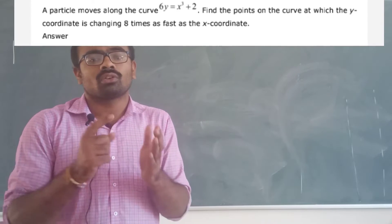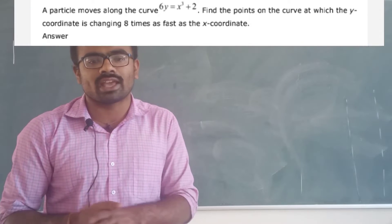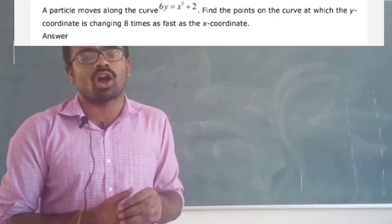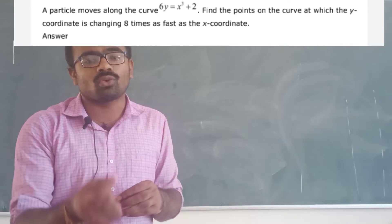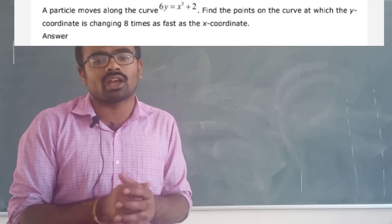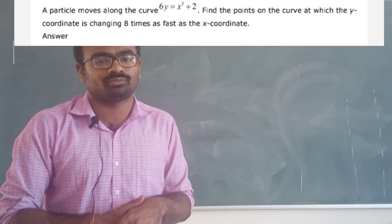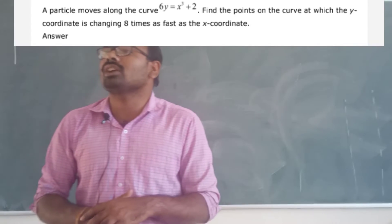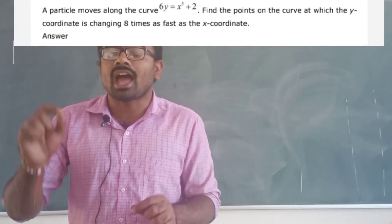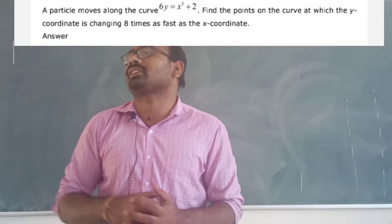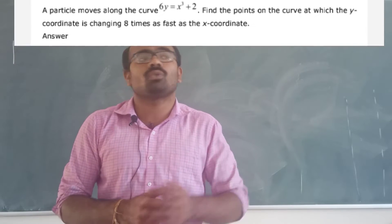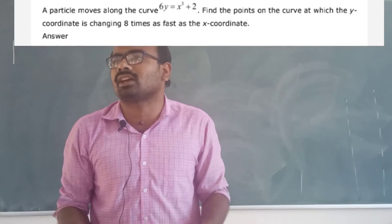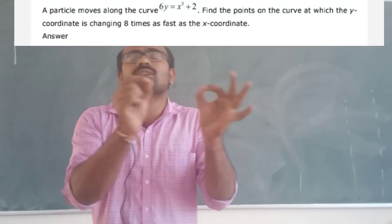The y-coordinate is changing 8 times as fast as the x-coordinate means dy/dt = 8(dx/dt), which implies dy/dx = 8.